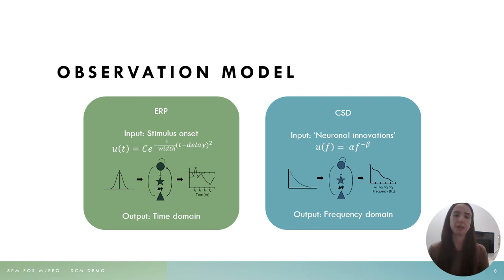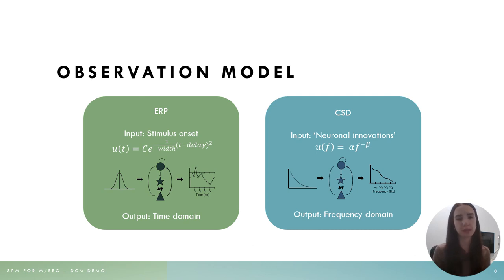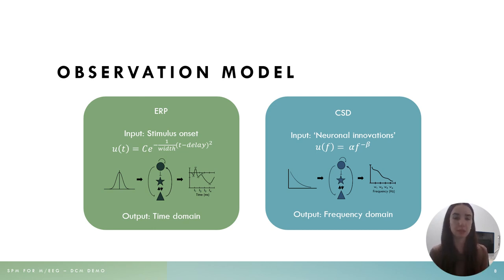Before we start, there are a few choices we need to make when specifying our model. First of all, we'll need to choose an observation model. There are different observation models depending on the data we're trying to explain with DCM. In DCM, the two most common are DCM for event-related potentials (ERPs) and DCM for cross-spectral densities (CSDs). In DCM for ERP, we model the onset of our stimulus as our input and the model returns predictions in the time domain.